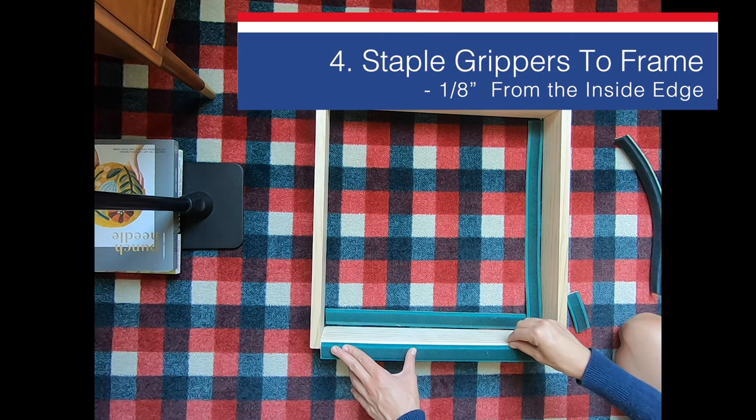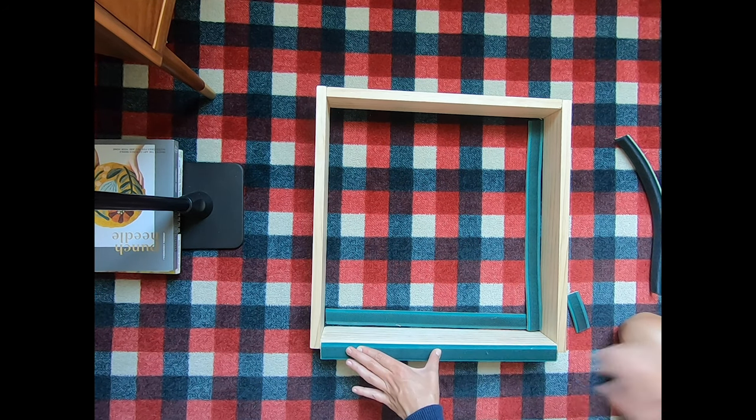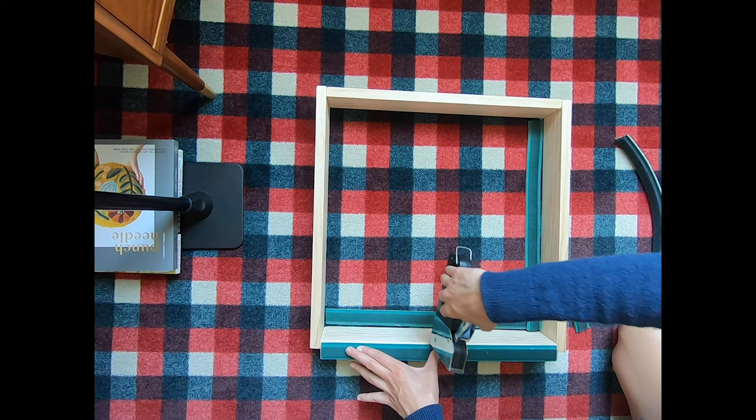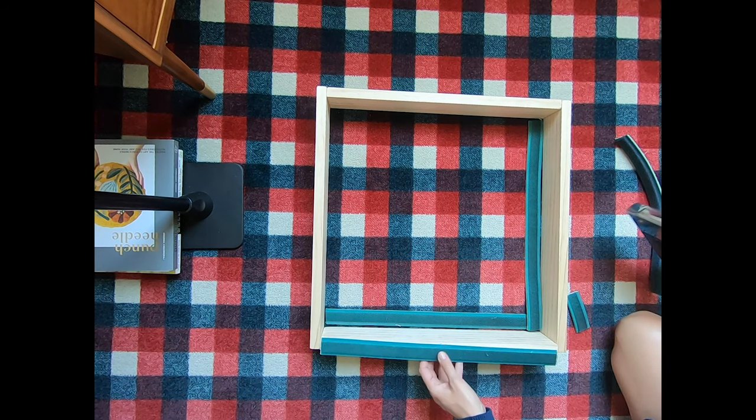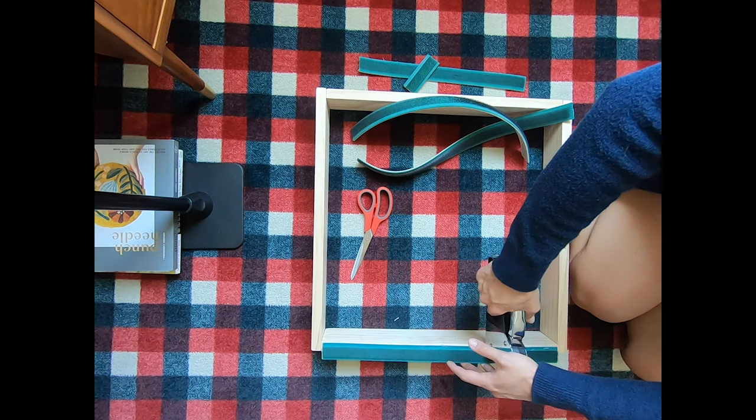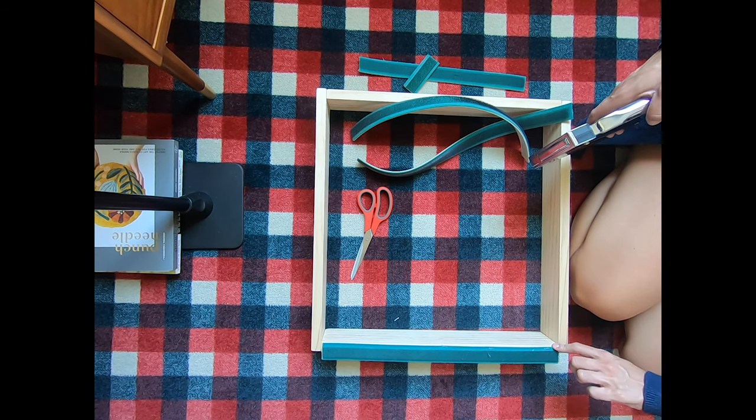There's about an eighth of an inch from the edge so your staple doesn't split your wood. So just barely see a little bit of the wood there. Then you're just going to take your staple gun and staple it. And I would do one in the middle and then one on the side to kind of get it straightened out.